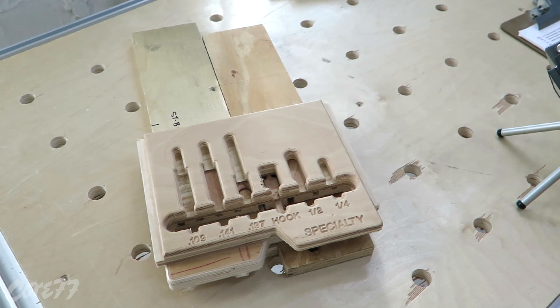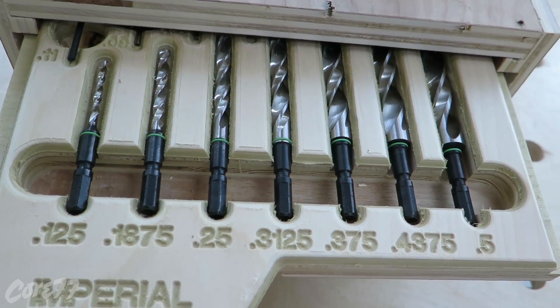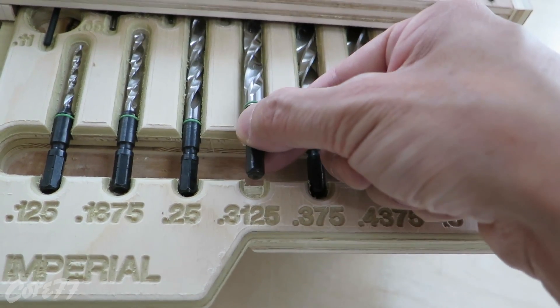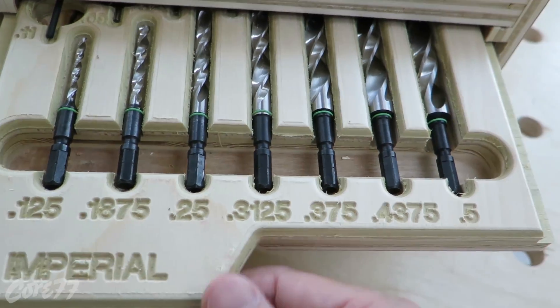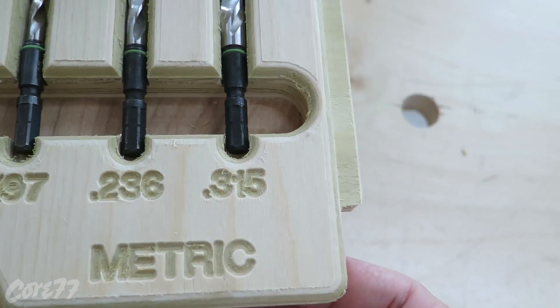It also made sense to have the machine cut the label text since I was already going to carve the bit diameters into the drawers. I use decimals rather than fractions because I hate doing math. This way, if I'm using an imperial bit and I find out that it's too small for whatever I'm trying to do and the next size up is too big, I can grab a metric bit and see what falls between what.